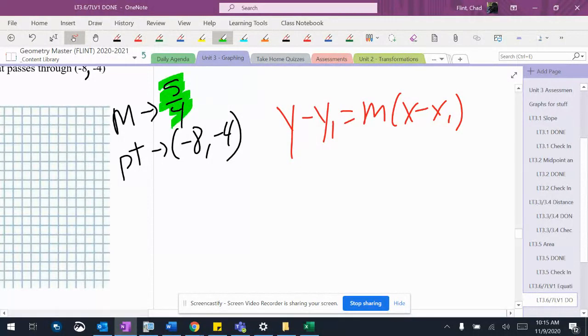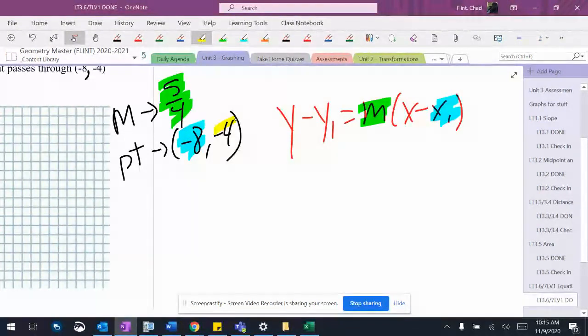The slope is right there. X1 is right there. And Y1 is right there. Now these have negatives in them.